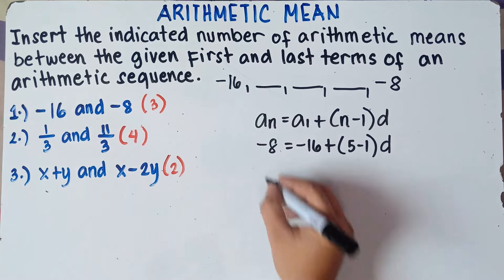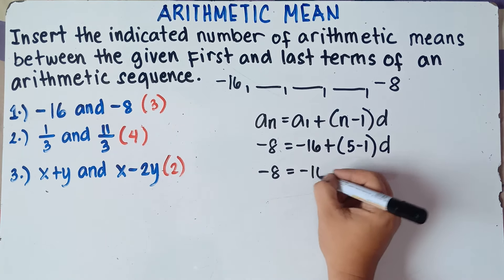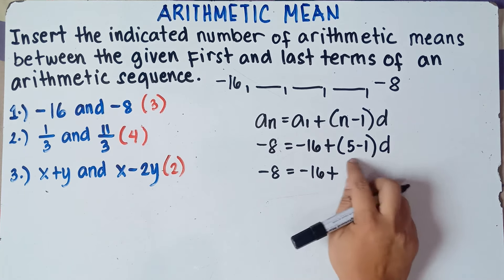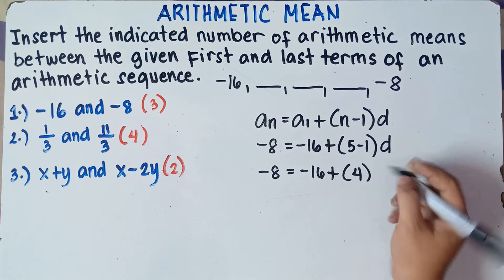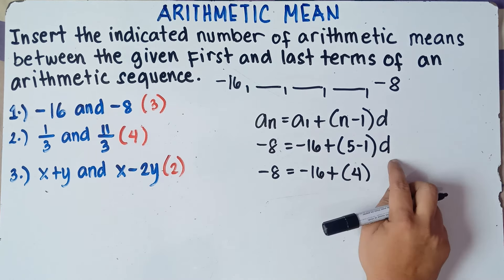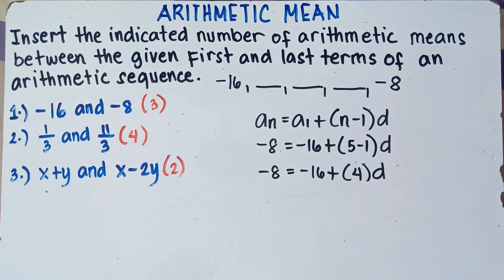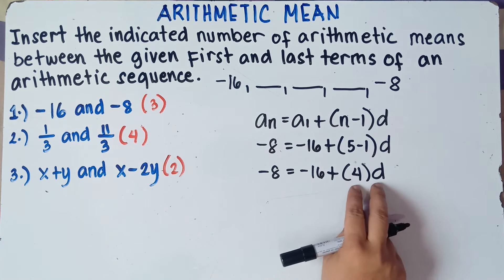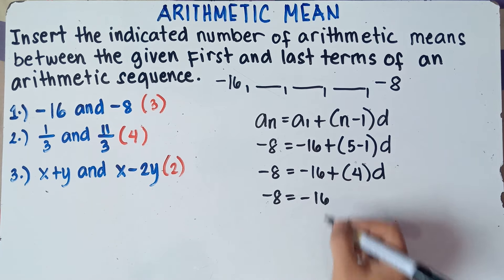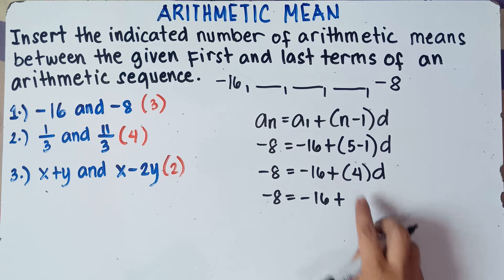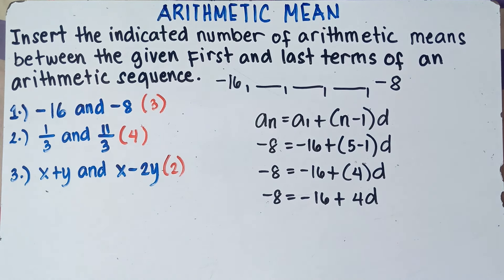So we have negative 8 equals negative 16, then 5 minus 1 is 4, so plus 4d. Multiplication comes first, so negative 8 equals negative 16 plus 4d.